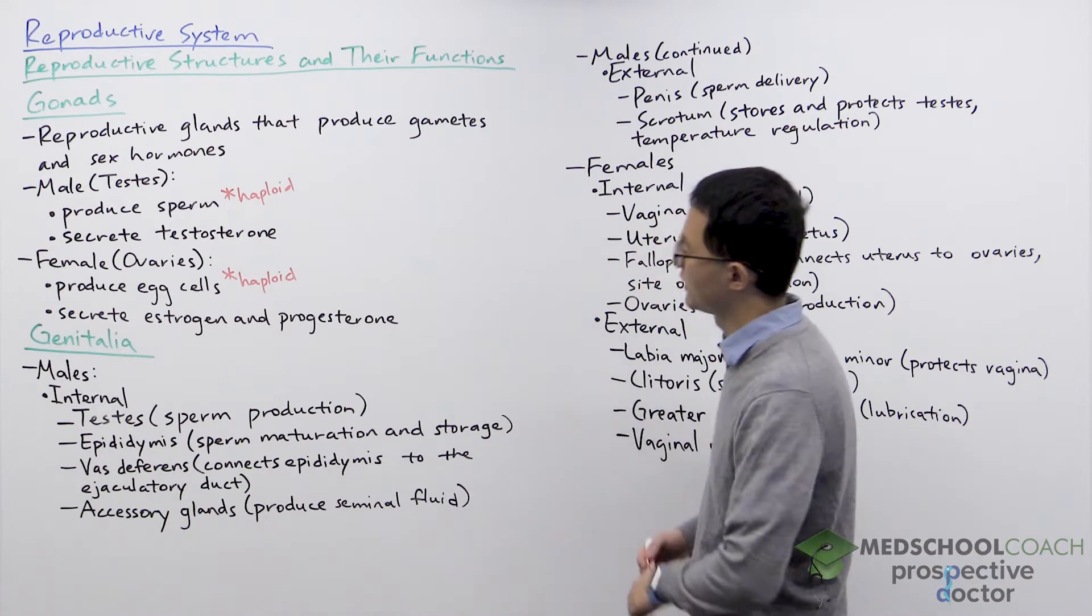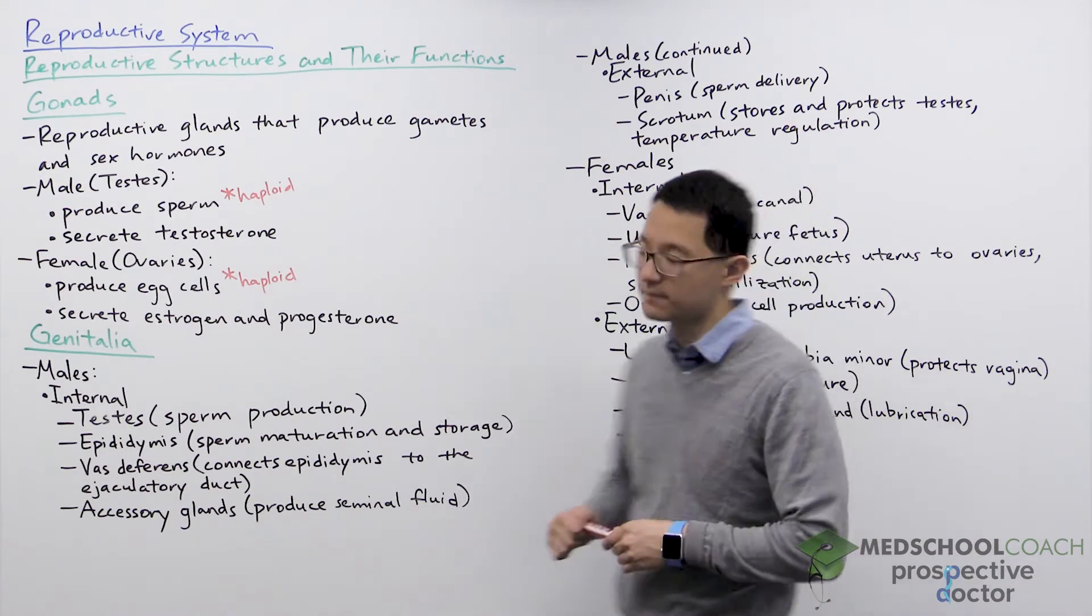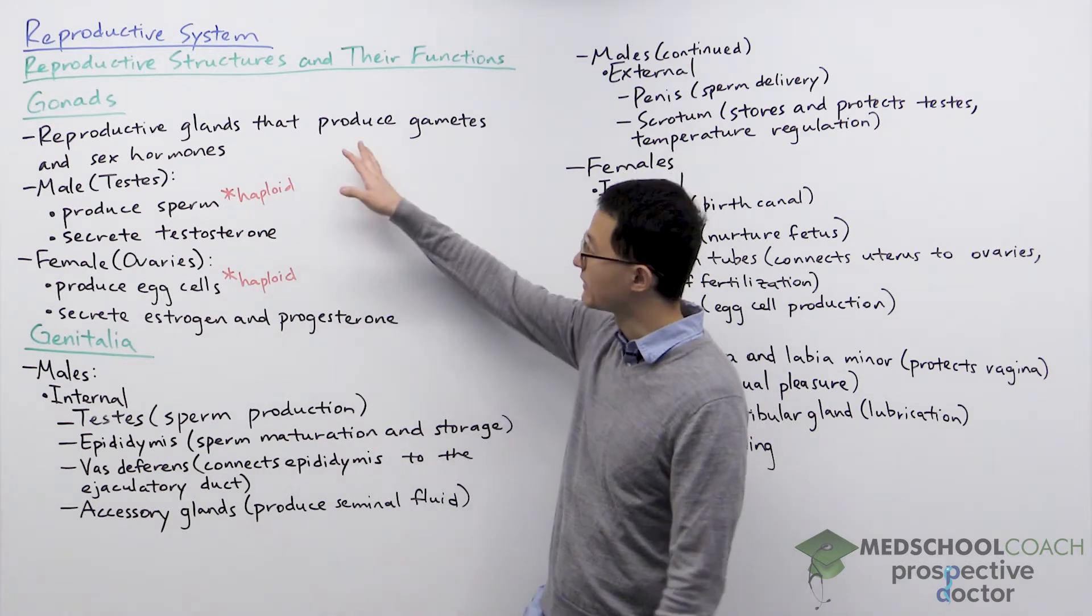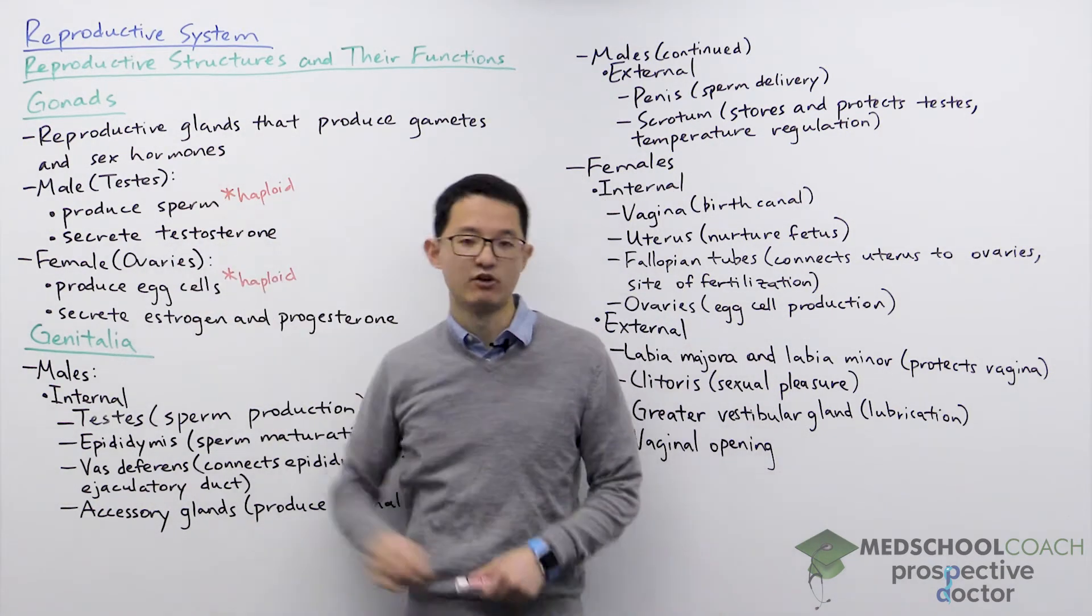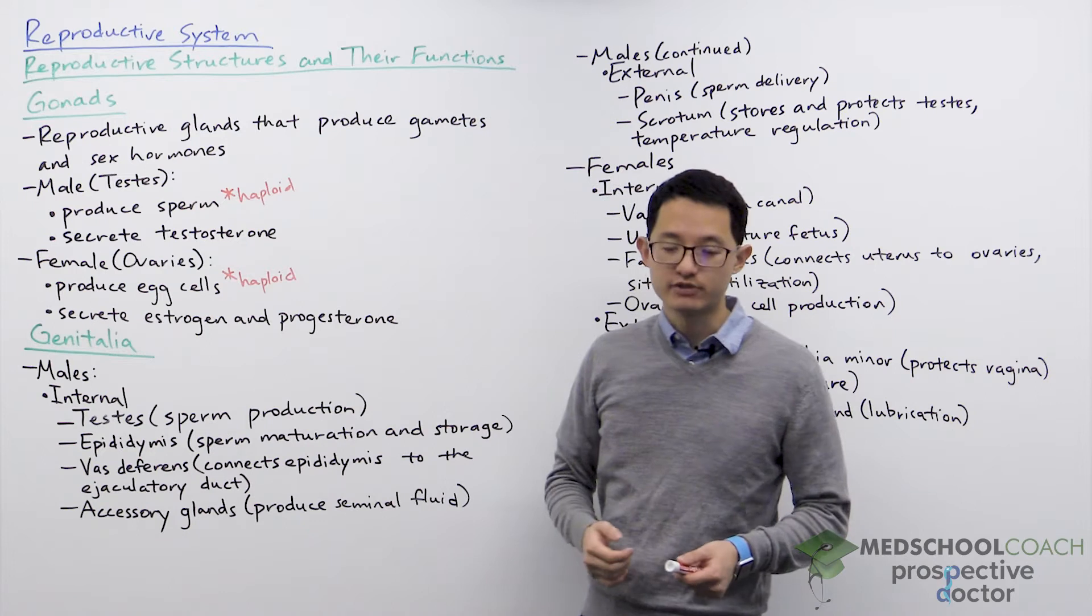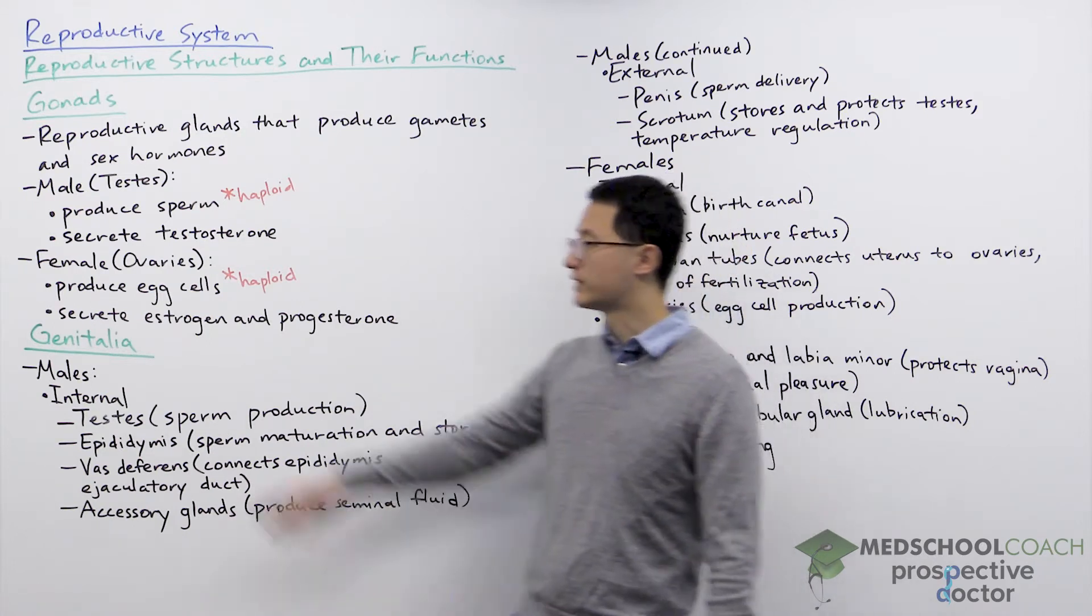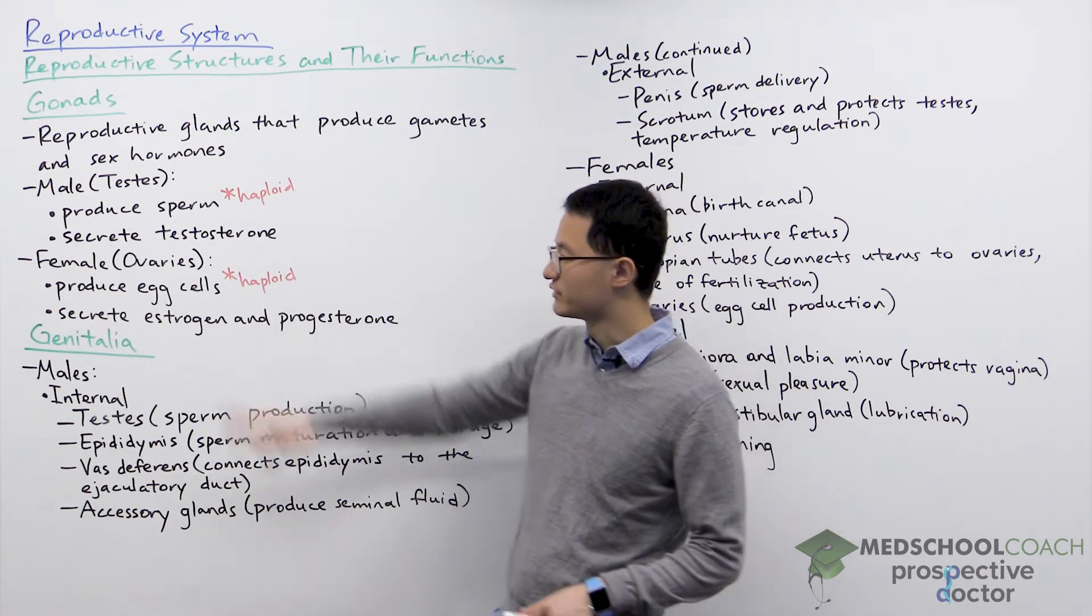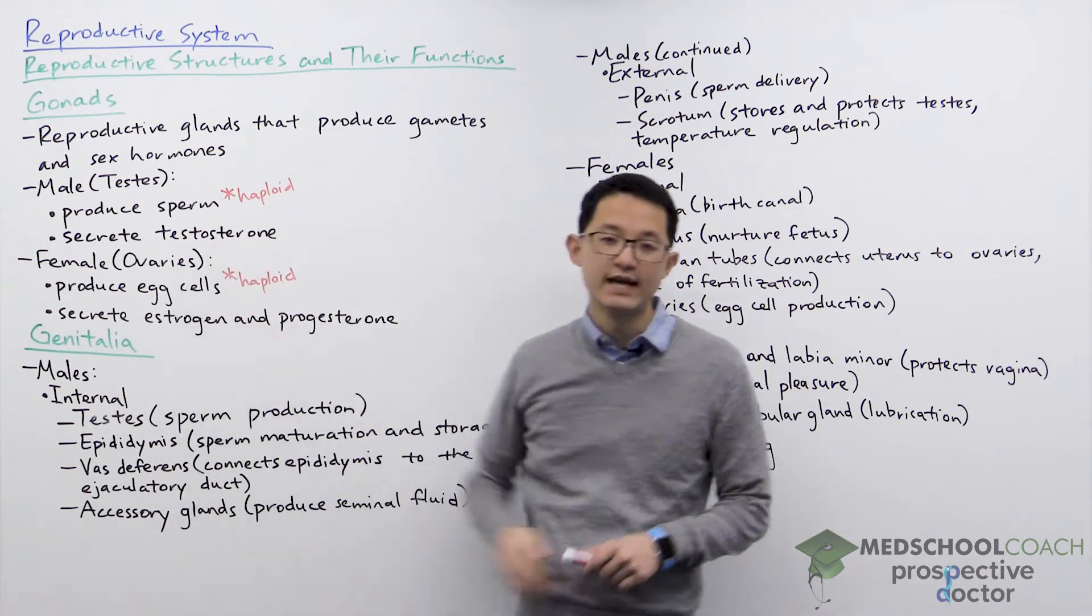So to start with we're going to discuss the gonads. The gonads are reproductive glands that produce gametes as well as sex hormones. In males the gonads are called the testes or testicles and they're responsible for producing sperm and secreting testosterone.